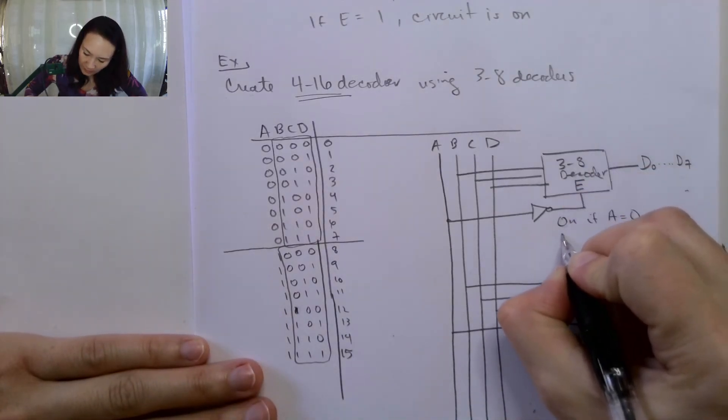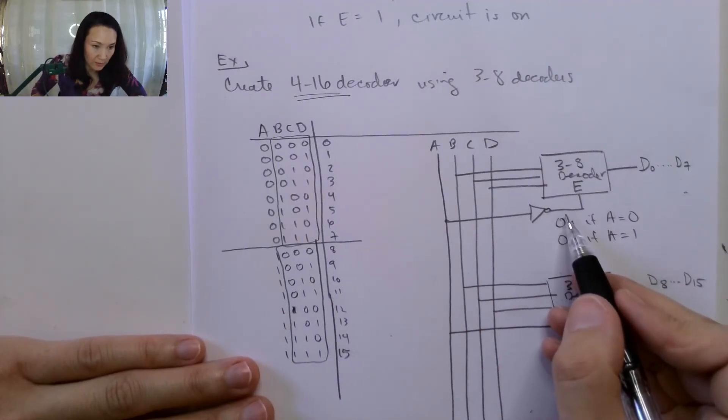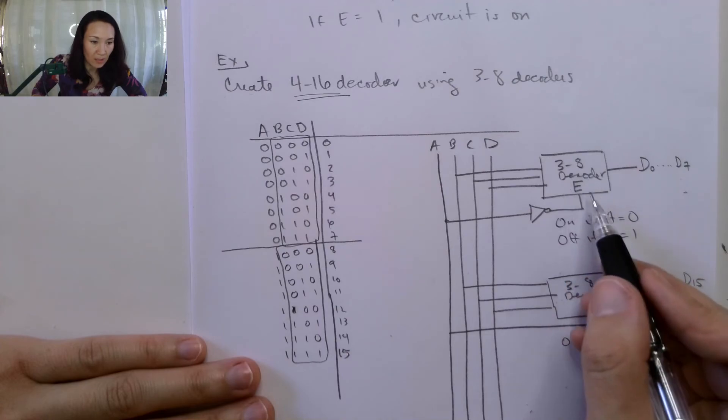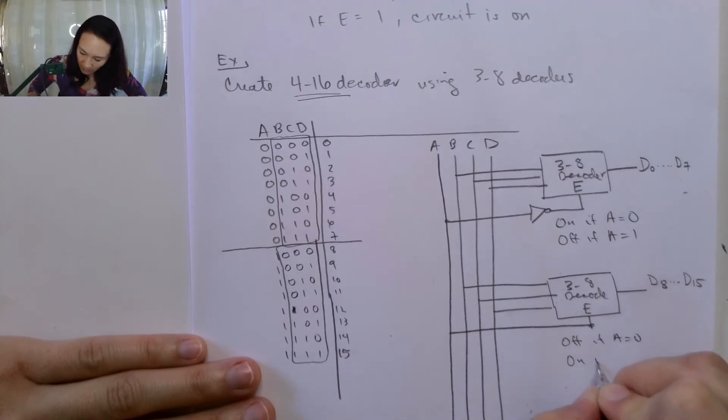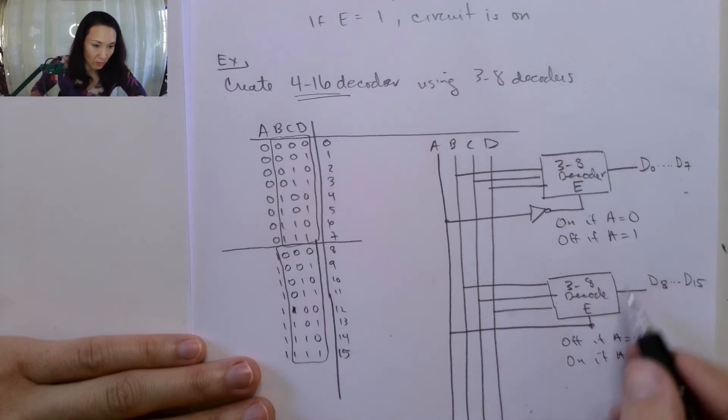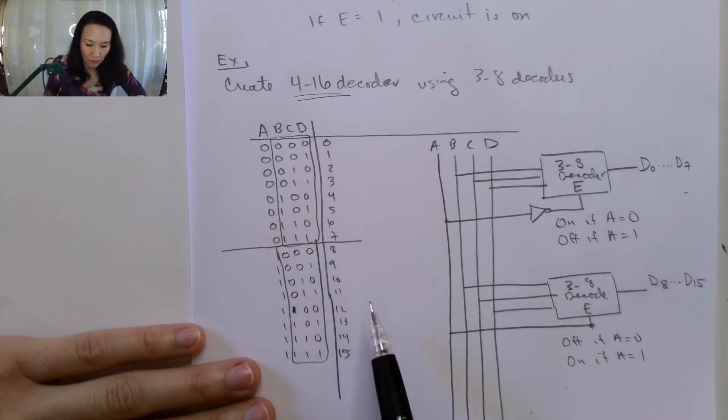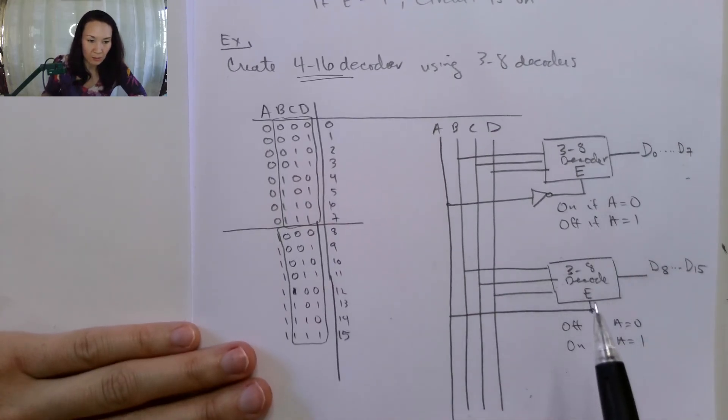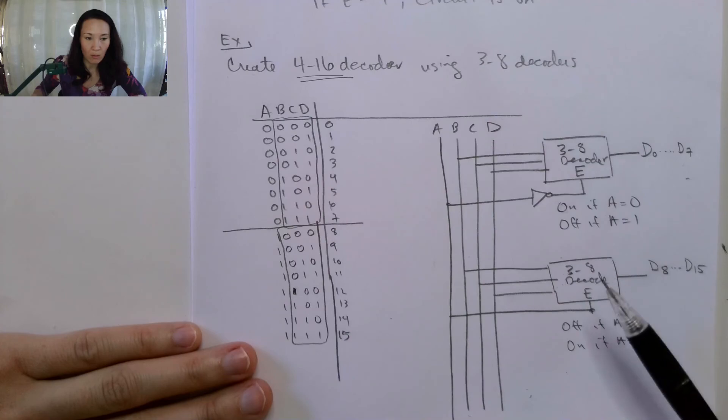And then conversely, this is going to be off if A is equal to 1. So if we have 1 come in here, we invert it to 0, so that's basically disabling this first decoder. But this is going to be on if A is equal to 1, because then we have a 1 directly coming into the enable. The concept is similar to a multiplexer in that we're using A as a select line to select between this decoder or that decoder.